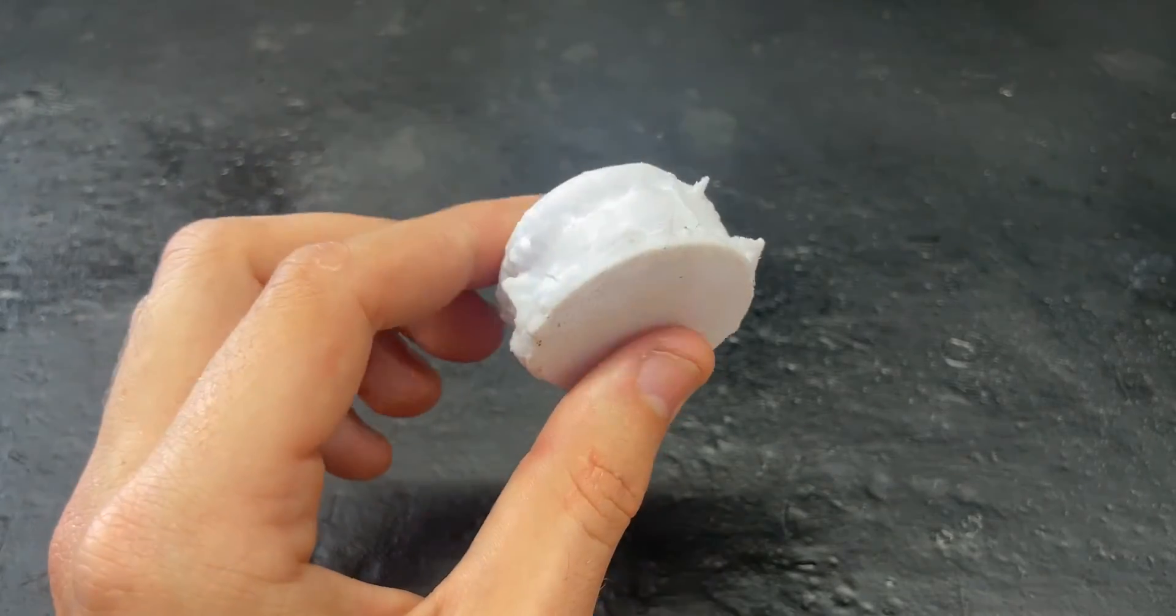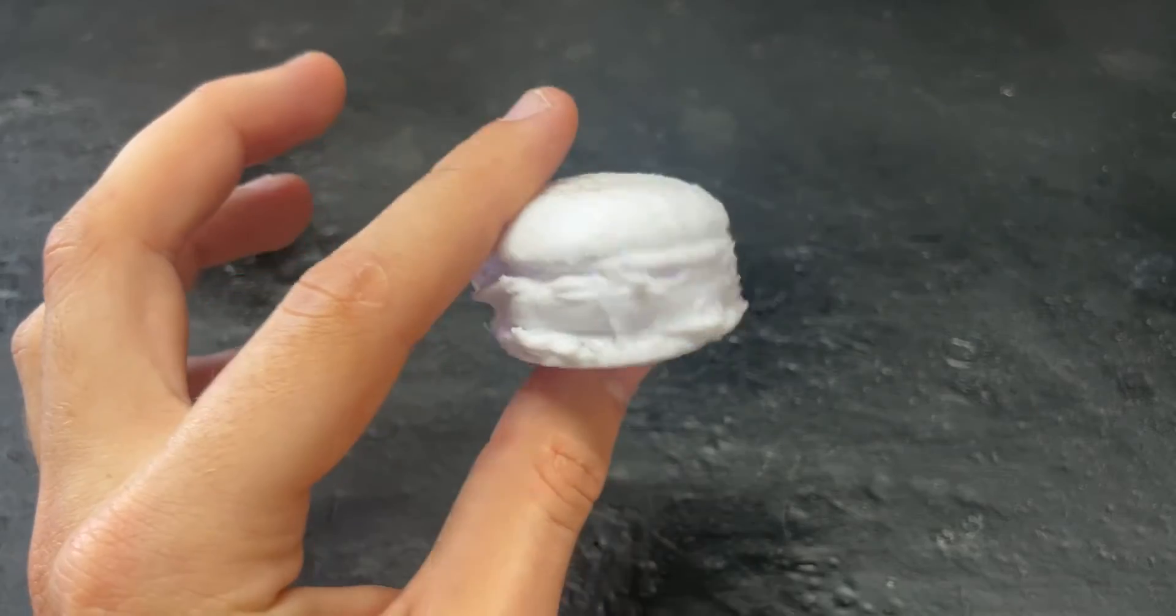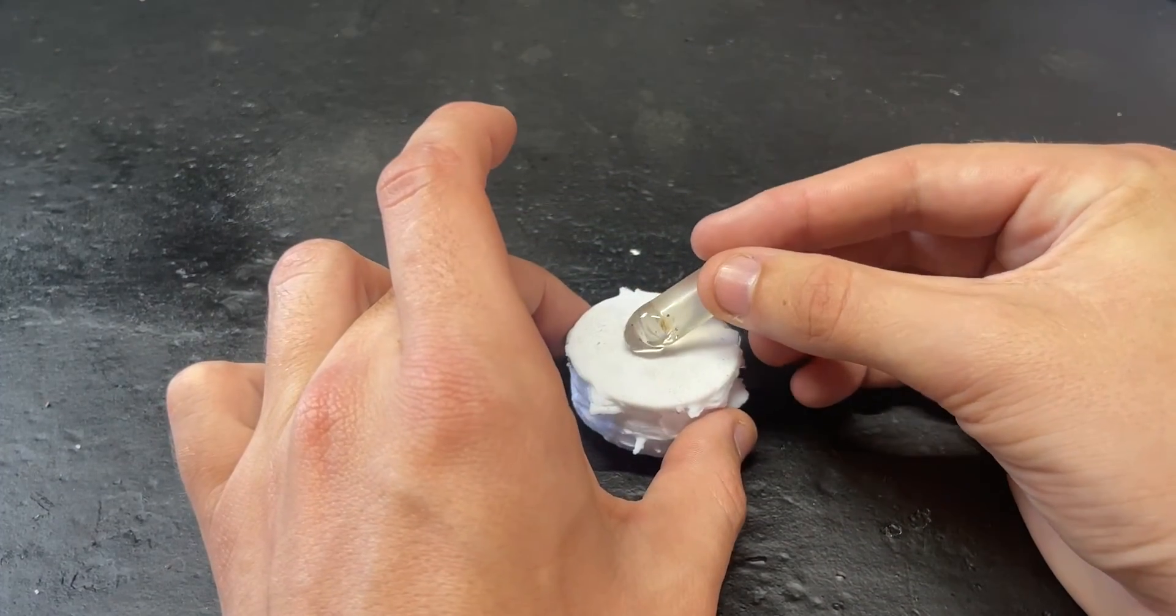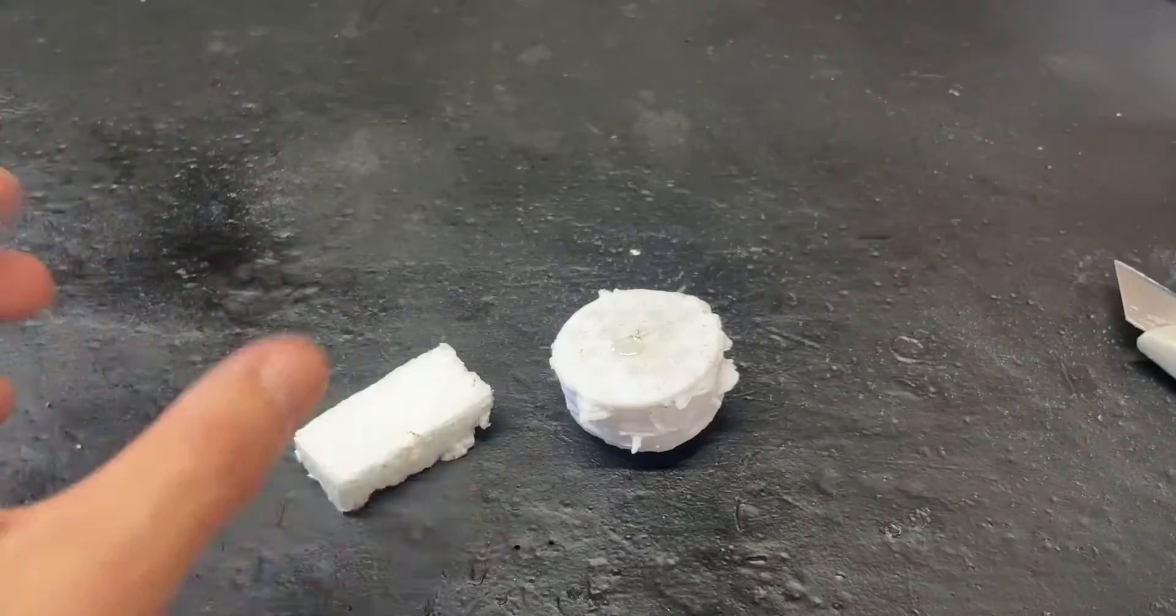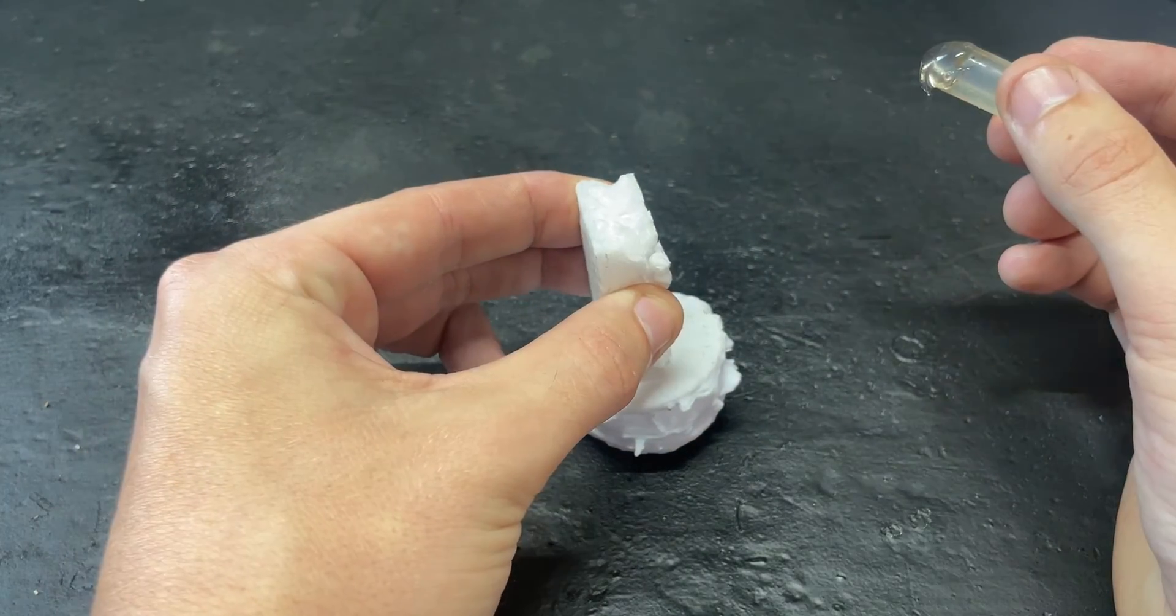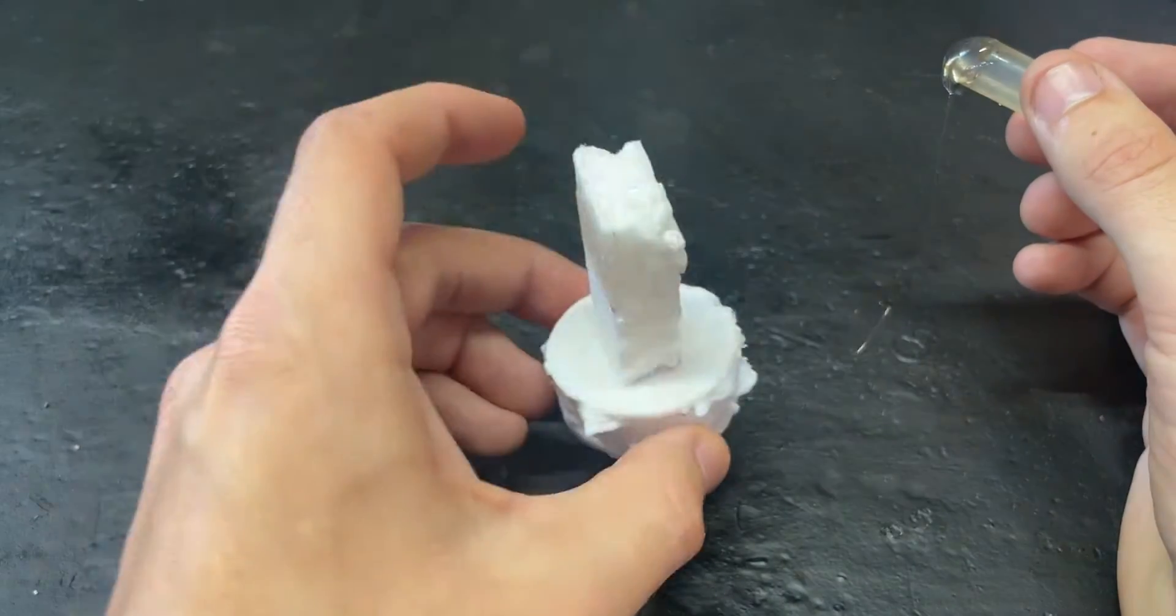So let's go ahead and set this up to do a lost PLA cast. Now we have to add a sprue to our part, and this is where we will pour in our molten metal. So I'm just going to hot glue down this piece of styrofoam, and that is where our molten metal will flow into our cast.